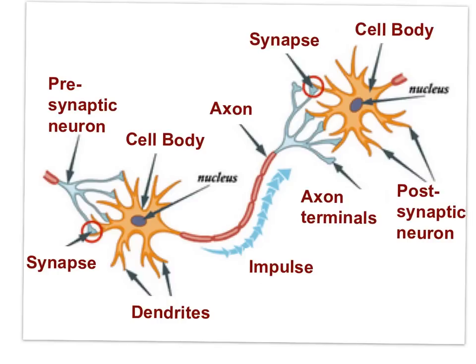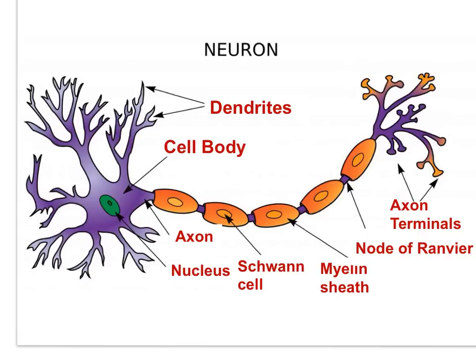In this diagram of a motor neuron, you can see the direction of signal propagation along the cell membrane — from the dendrites, along the cell body, and along the axon to the axon terminals, where this neuron synapses with another neuron or with an effector, a muscle or a gland. You can see the myelin sheath surrounding the axon and the gaps known as nodes of Ranvier. The impulse jumps from node to node, known as saltatory conduction.